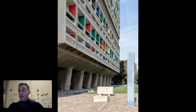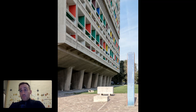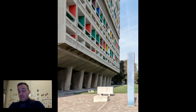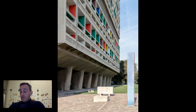The second project is from Le Corbusier, who we know well at this point. This is also 1952 — 1952 is just an amazing year for architecture. This is Unité d'Habitation, in Marseille, France. This is really Corb's first major large-scale project. Ronchamp is a larger project than the typical villa residential work that Corb was doing for the 15 or 20 years up until this point.